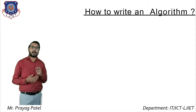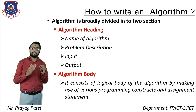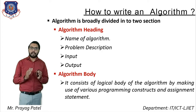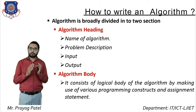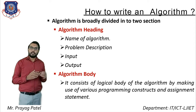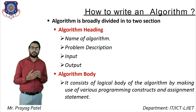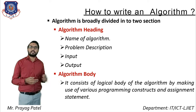Now consider how to write an algorithm. For writing an algorithm, we consider two sections: the algorithm heading part and the algorithm body part. The algorithm heading part has four sub-parts: name of algorithm, problem description, input, and output. The algorithm body part consists of the logical body of the algorithm using various programming constructs and assignment statements.